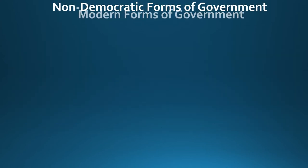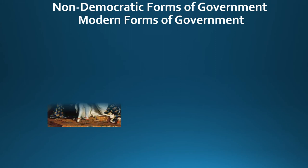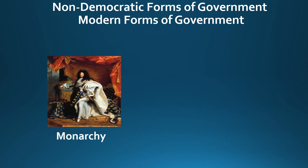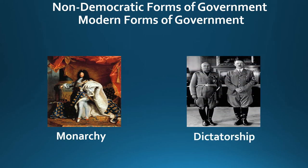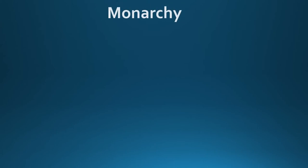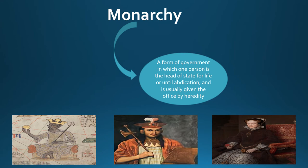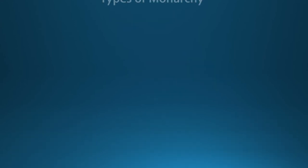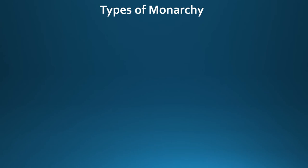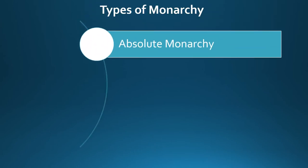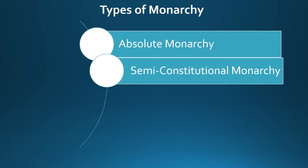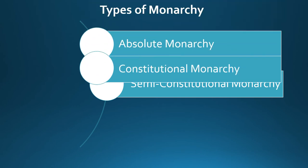We will now move on to modern forms of non-democratic government: monarchies and dictatorships. A monarchy is a form of government in which one person is head of state for life or until abdication, and is usually given the position by heredity. There are three main types of monarchies: absolute monarchies, semi-constitutional monarchies, and constitutional monarchies.